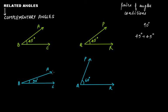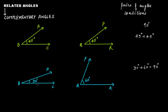Similarly, angle ABC and angle PQR here form another pair of complementary angles. Why? Because 30 degrees plus 60 degrees equals 90 degrees. So these two angles are complementary. Angle ABC is complement to angle PQR and angle PQR is complement to angle ABC — both are complement to each other.